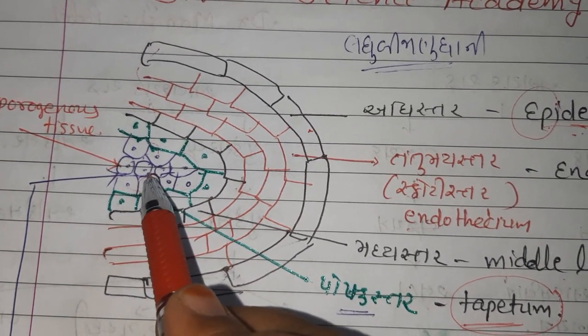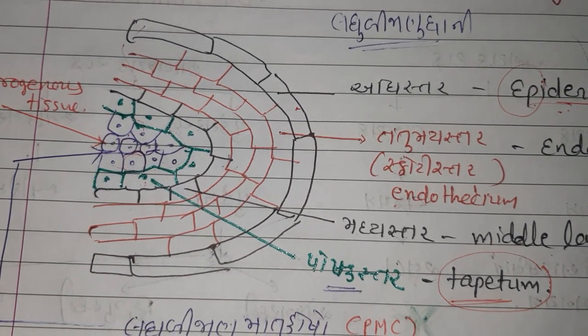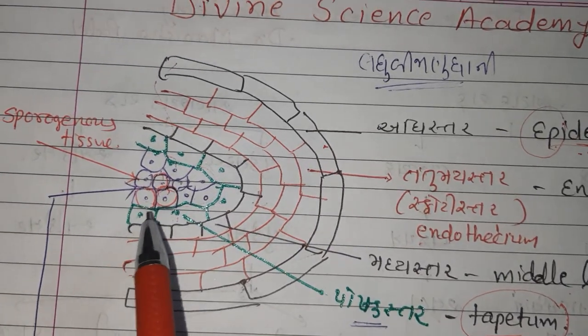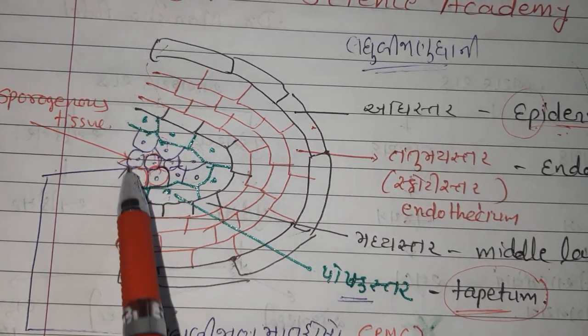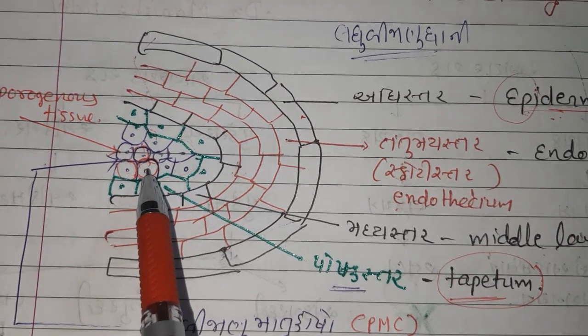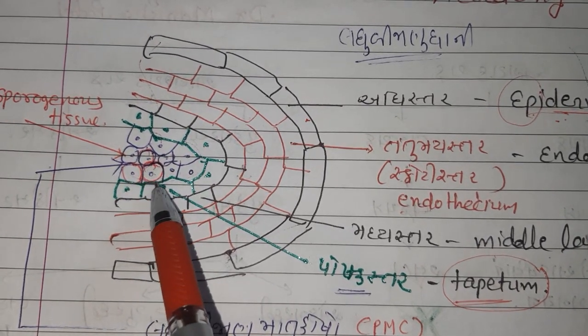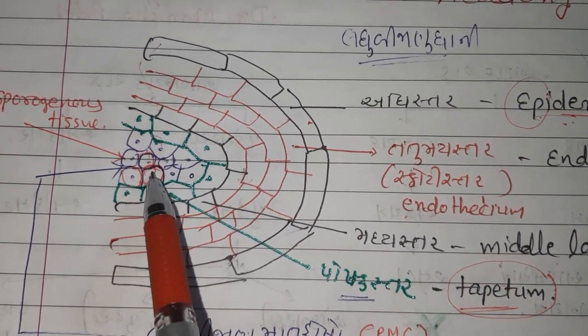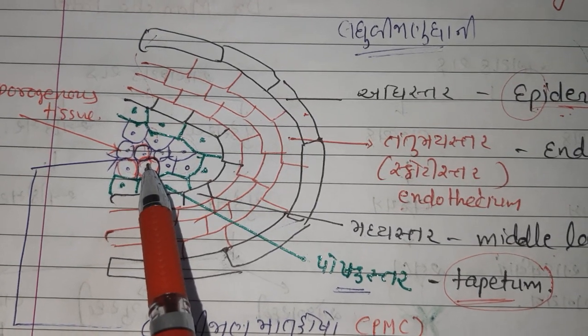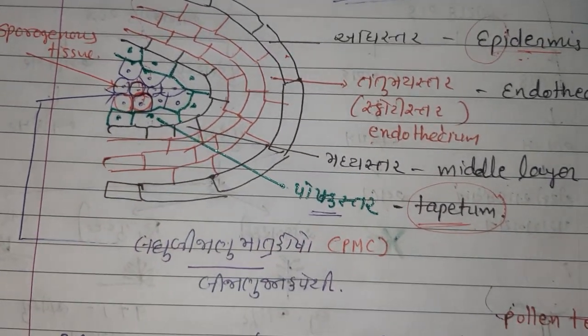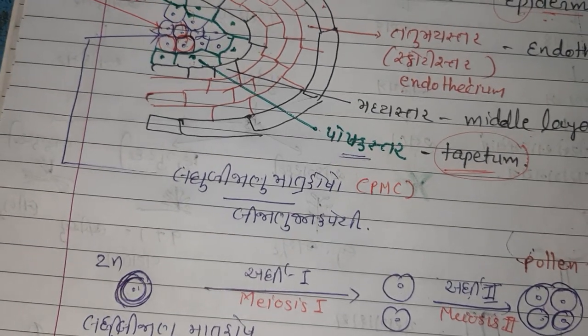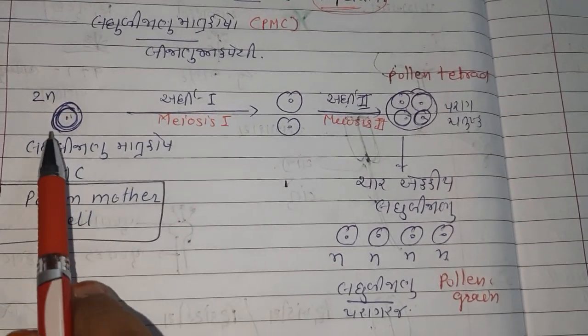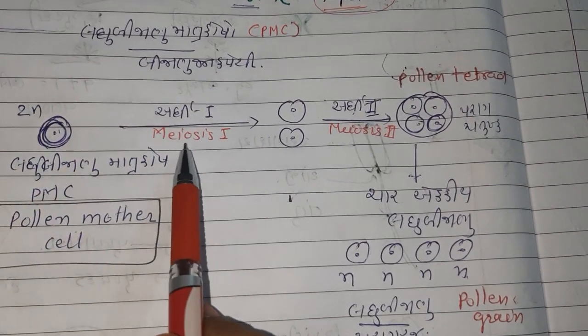Each cell of sporogenous tissue is known as a pollen mother cell. That single cell is known as a pollen mother cell. Or you can understand that sporogenous tissue possesses pollen kit, because from each and every pollen mother cell, pollen grains are developed. That site is also known as the pollen kit. Now this pollen mother cell undergoes meiotic division and forms pollen grains.